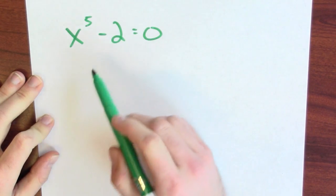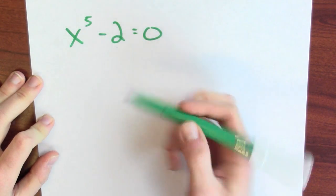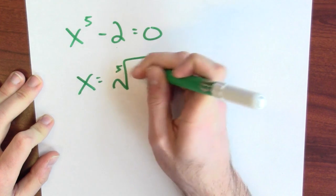Take its fifth power and subtract 2, I get 0. Yes, I could solve this quintic. I mean, a solution is the fifth root of 2.